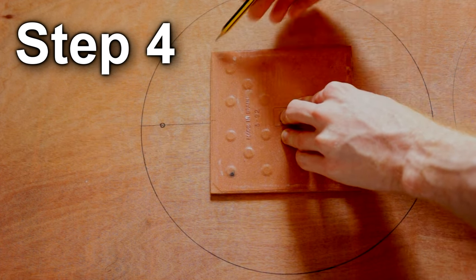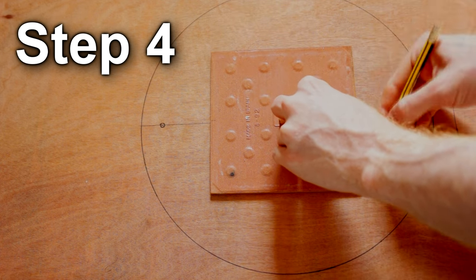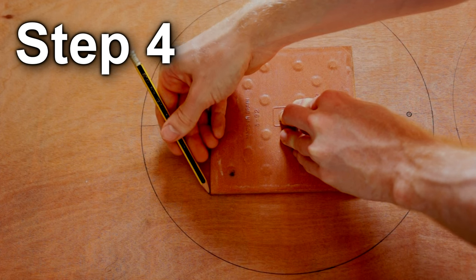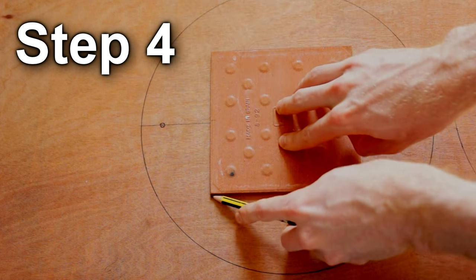Place your square template as centrally as possible with the aid of your markings, and draw around the outside. Make a mark on one side of the template, and a corresponding mark on every copy you make.